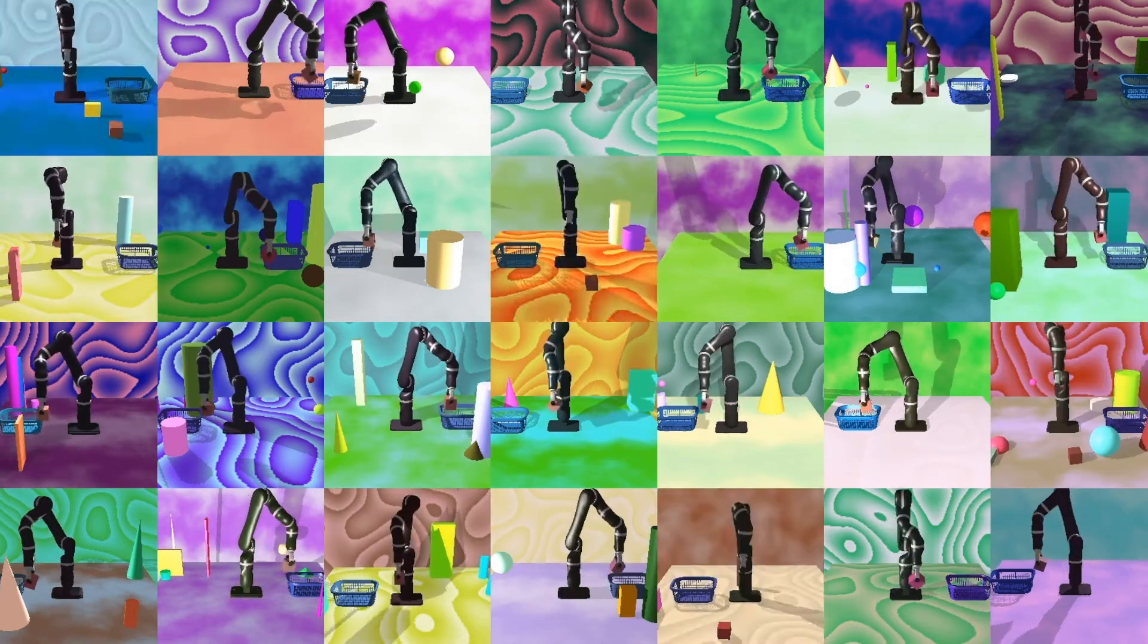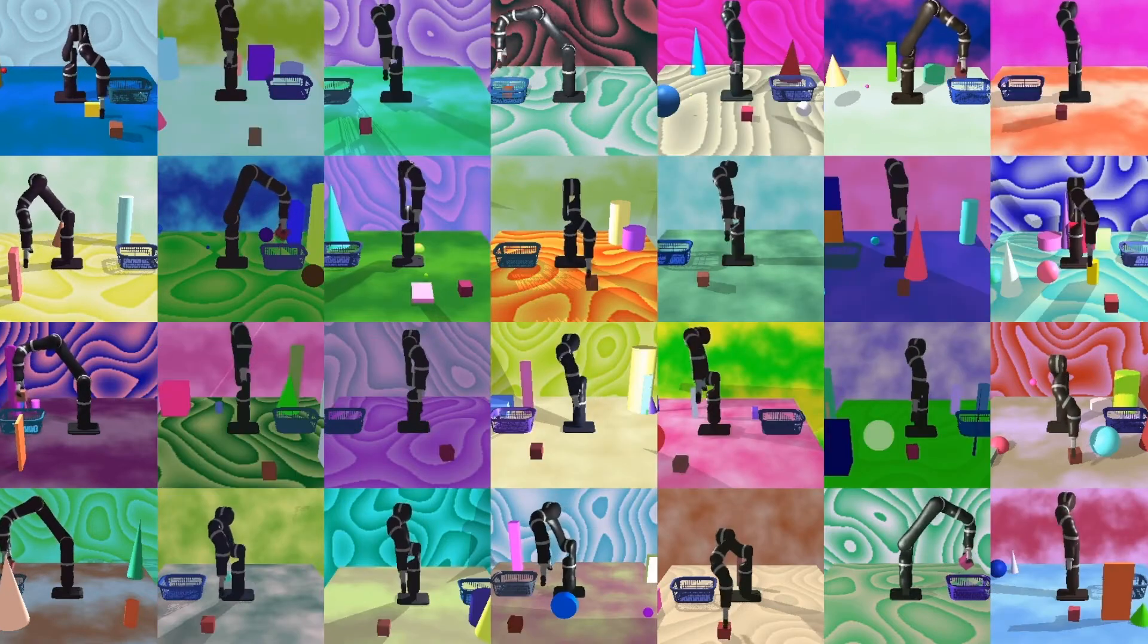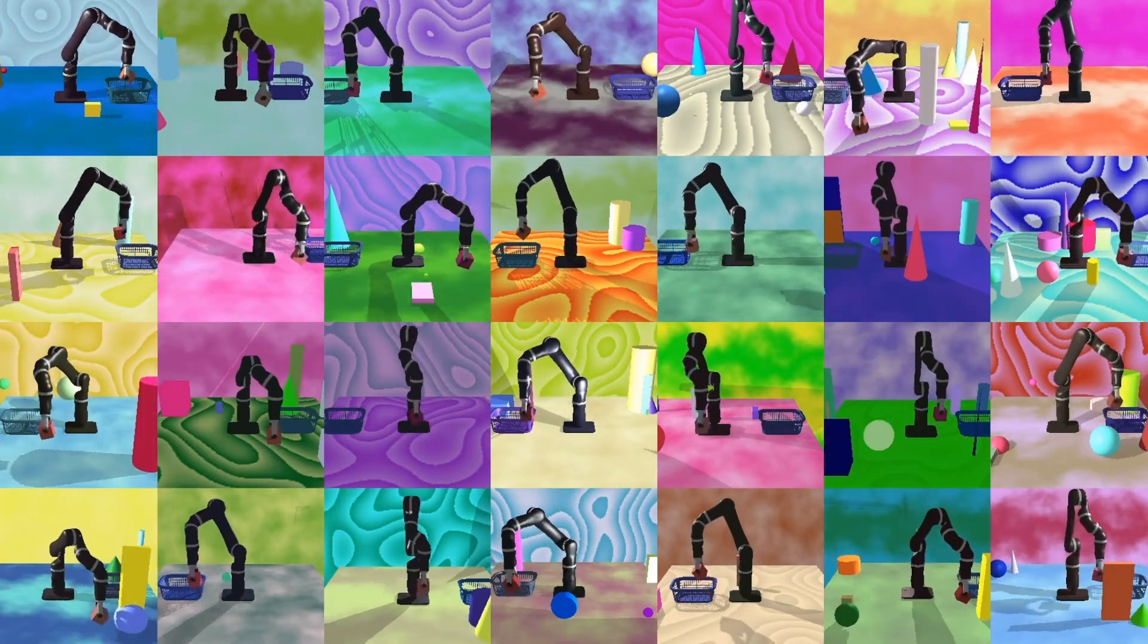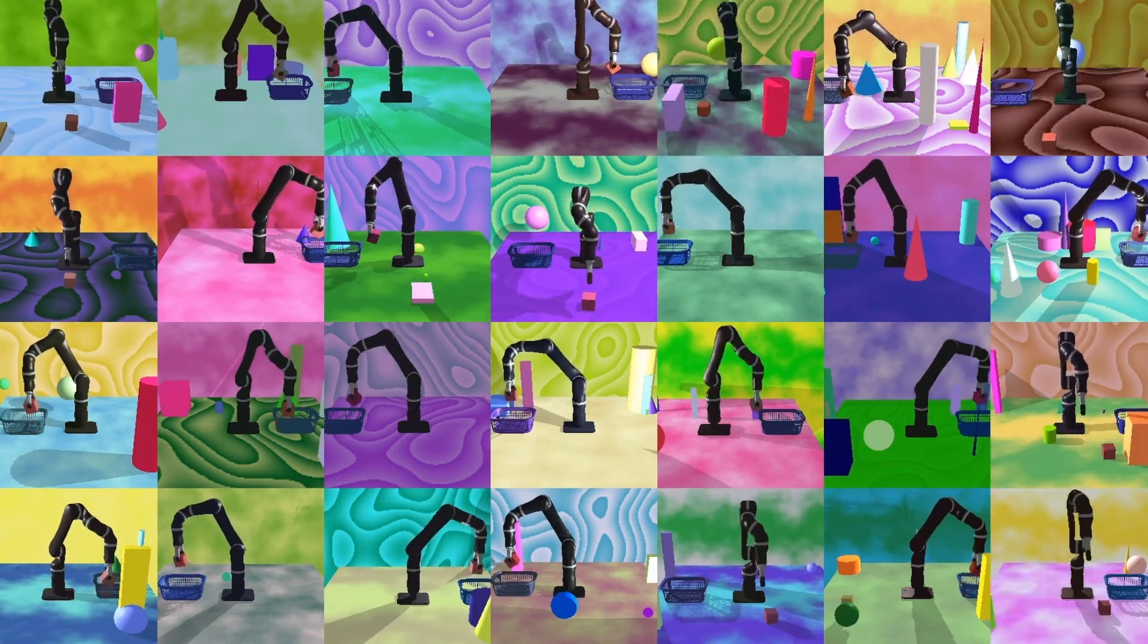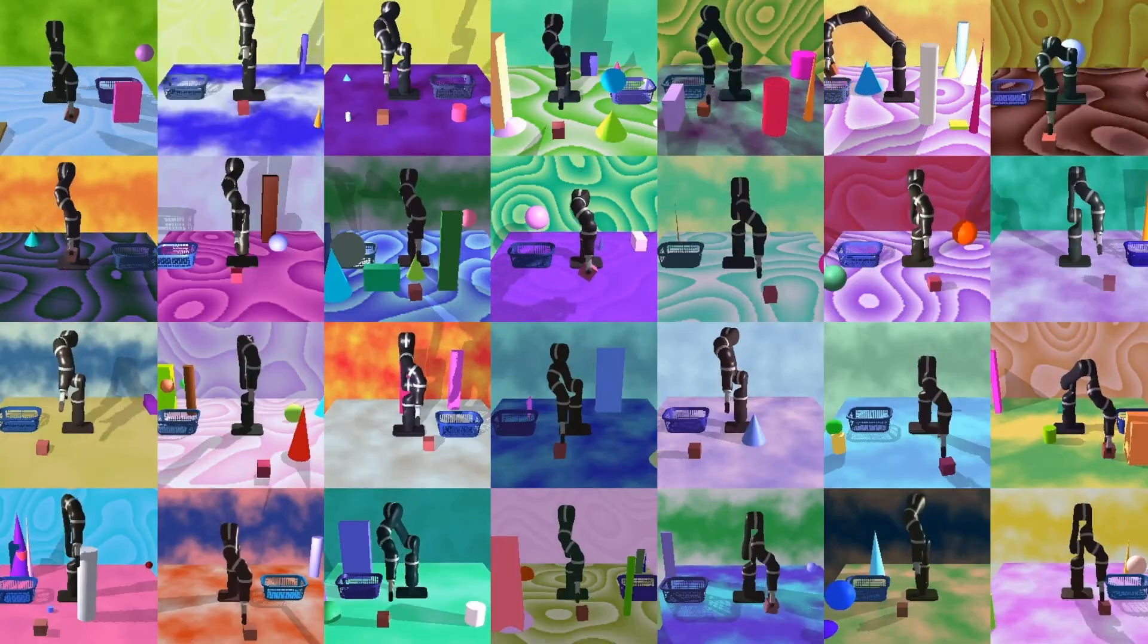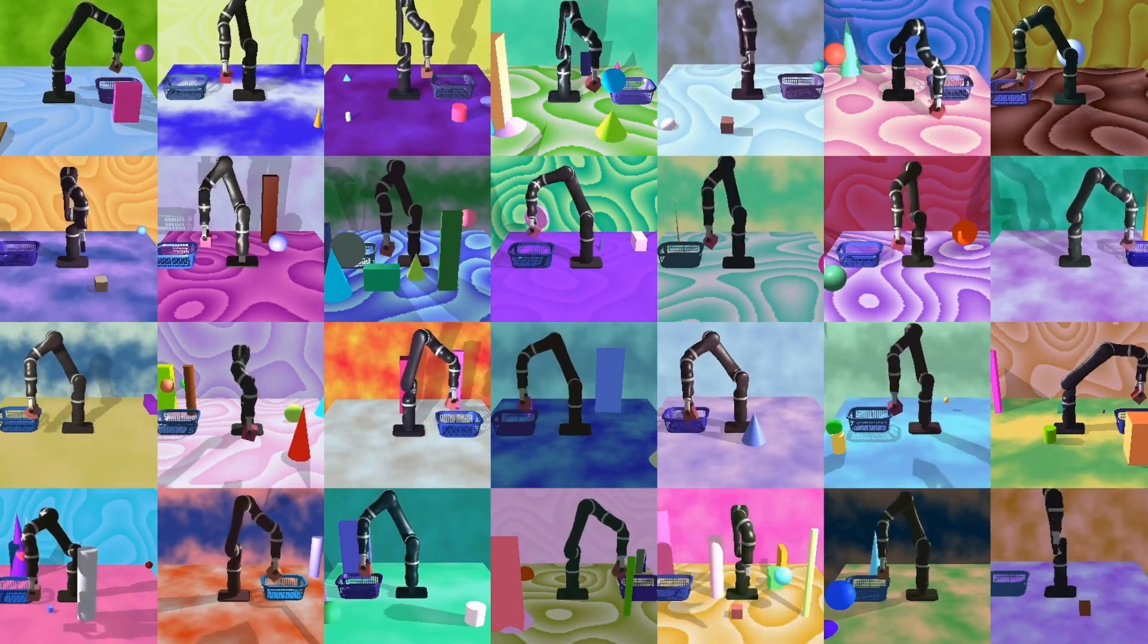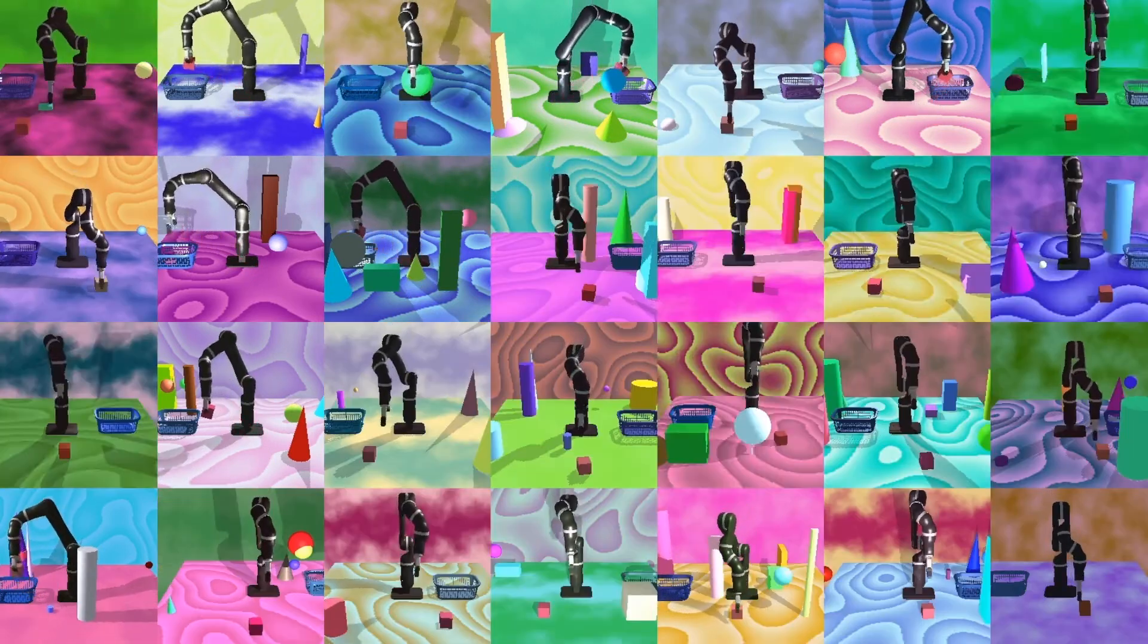During data collection, we vary the color of the cube, basket and arm components, the position of the camera, light source, basket and cube, the height of the arm, and the starting pose of the arm. We procedurally generate textures using Perlin noise, and finally we insert random primitive shapes as clutter with random colors, positions and sizes.